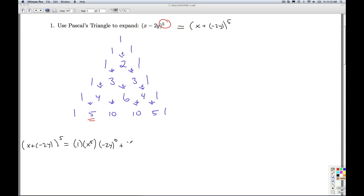Plus 5 x to the fourth times minus 2y to the first power. Plus 10 x cubed times minus 2y squared. Plus 10 x squared minus 2y cubed. Plus 5x to the first power minus 2y to the fourth plus 1 x to the zero power times minus 2y to the fifth.